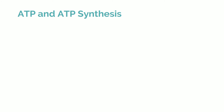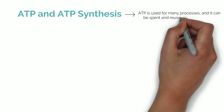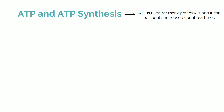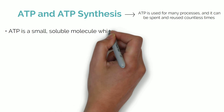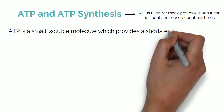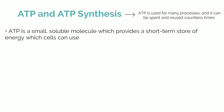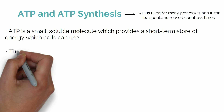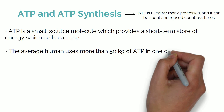ATP is a universal energy currency in all organisms. Like money, it is used for many processes and can be spent and reused countless times. ATP is a small, soluble molecule which provides a short-term store of energy which cells can use. The average human uses more than 50 kilograms of ATP in one day.